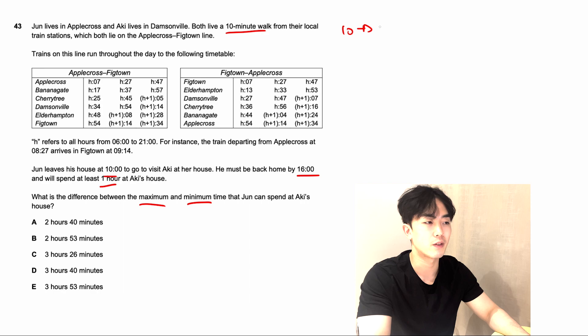If he leaves at 10, that means he arrives at the train station at Appercross at 10 past 10. Looking at this first chart, Appercross Thicktown, what's the first train he can get? He's going to miss the 10:07 one, meaning he's going to have to get the 10:27 train from Appercross. Looking at the timetable, what time does he arrive at Damesonville? It's going to be 10:54. He arrives at the station at this time, but that doesn't mean he arrives at Aki's house. That's another 10 minute walk. So he will arrive at Aki's house at 11:04.